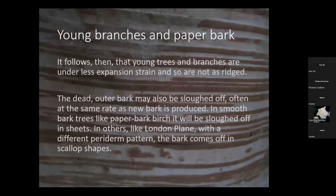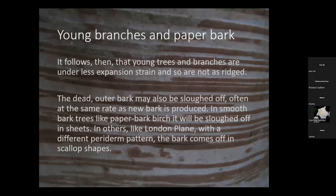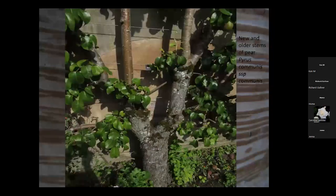By comparison, beech has a single periderm which wraps around the whole tree and therefore continues dividing. You don't get gaps in it, so the bark is smooth. Also, the layer of phellum — those outer dying cells — is much thinner in beech, so it's not under as much strain as in oak, and therefore you don't get the cracks. Young branches aren't expanding proportionately as quickly as older trees, so they tend to have smooth bark. As cells die on the outside and the tree expands, the outer bark might actually come off.